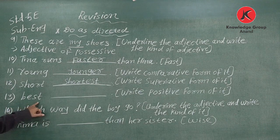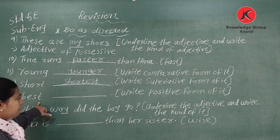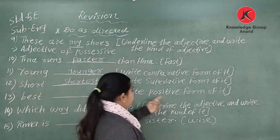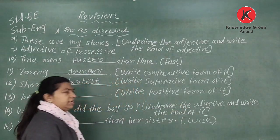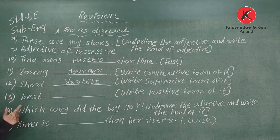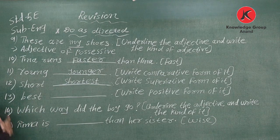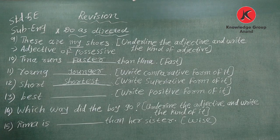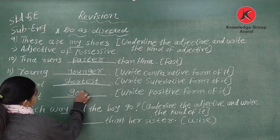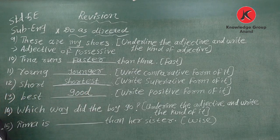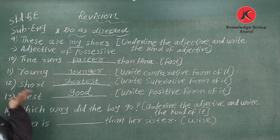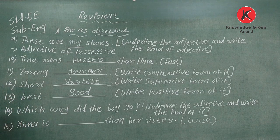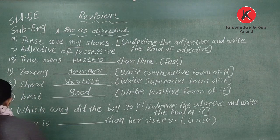Number thirteen: 'Best' — bracket says positive form. Best is the superlative form. So best's positive form is 'good.' You have to remember: positive form, its comparative form, and its superlative form.